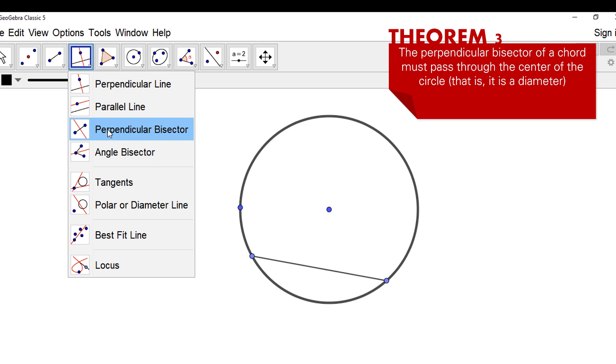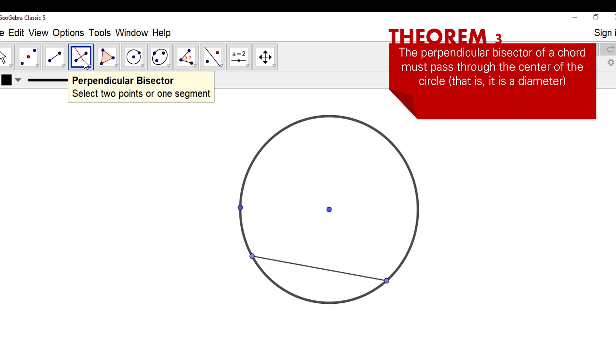Let's see if it will pass through the center. I already activated perpendicular bisector, so I have to click the endpoints of the bisector, and it should pass through the center of the circle, as you can see.